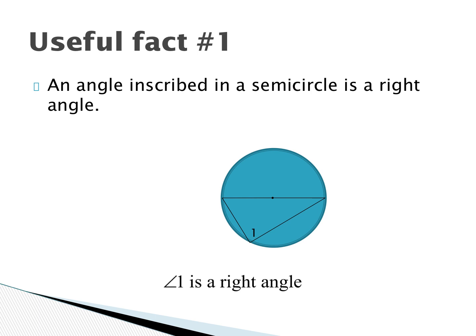An angle inscribed in a semicircle is always a right angle — if you're only dealing with half the circle, it has to be a right angle. This goes back to what we proved when we drew the diameter.